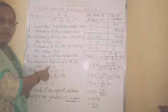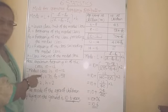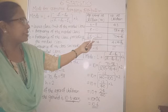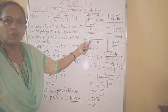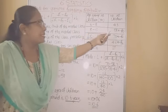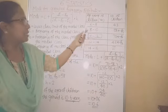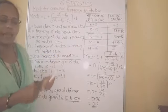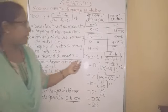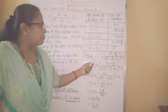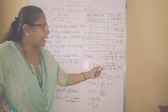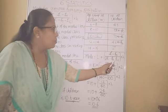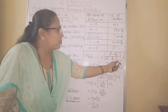So this way we got all values. First step: observe the maximum frequency — the class that frequency belongs to is the modal class. Then L is the lower class limit of the modal class, F0 is the preceding class frequency, F1 is the modal class frequency, F2 is the succeeding class frequency, and H is upper minus lower class limit of the modal class. Now we will write the formula: Mode equals L plus bracket F1 minus F0 upon 2F1 minus F0 minus F2, close bracket, into H.